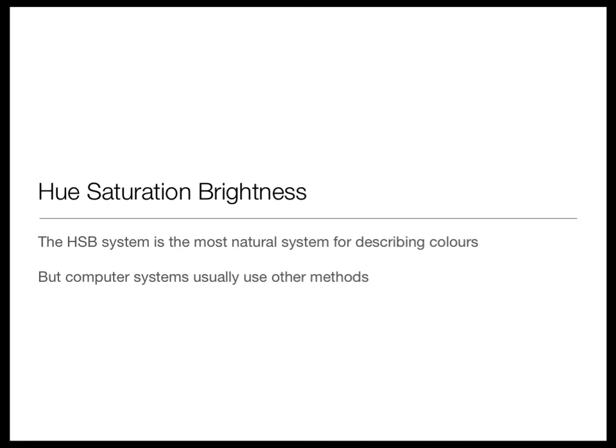The value of hue, saturation, and brightness is that it most clearly maps the way humans think about, talk about, and imagine color. It's easy to decide on the hue — something is bluish, greenish, reddish. Saturation tells you if the color is pure and strong or not. Brightness is very familiar. That's the main value of it.